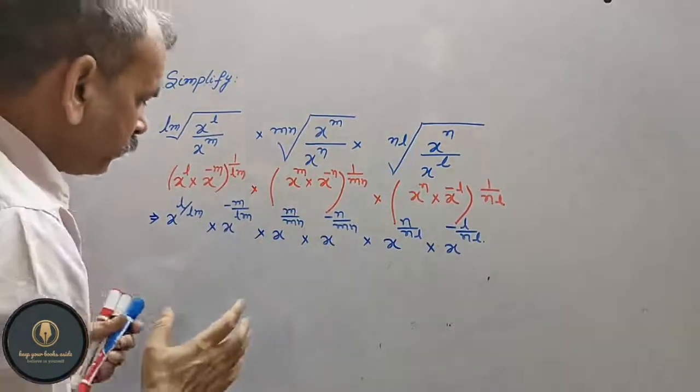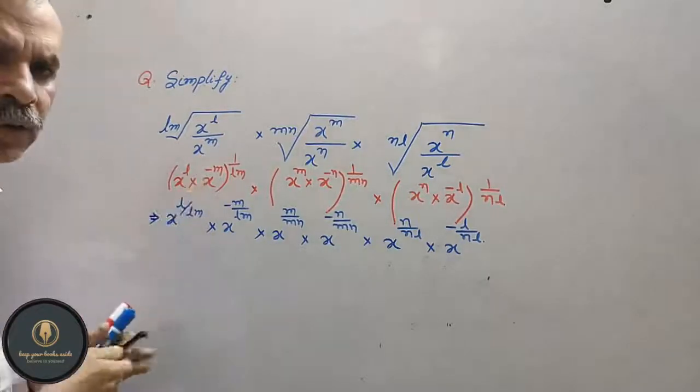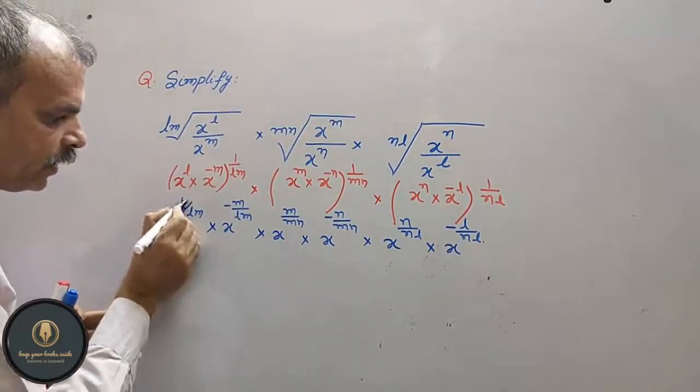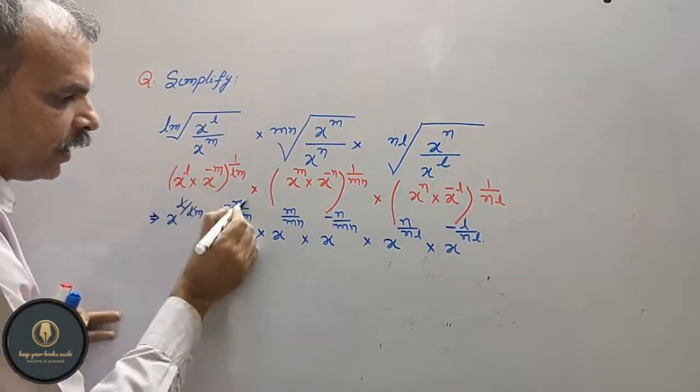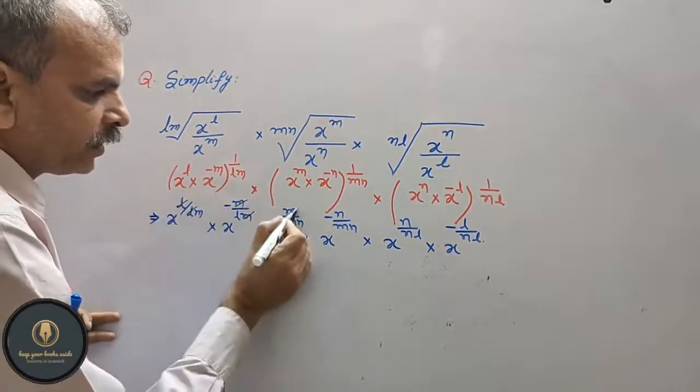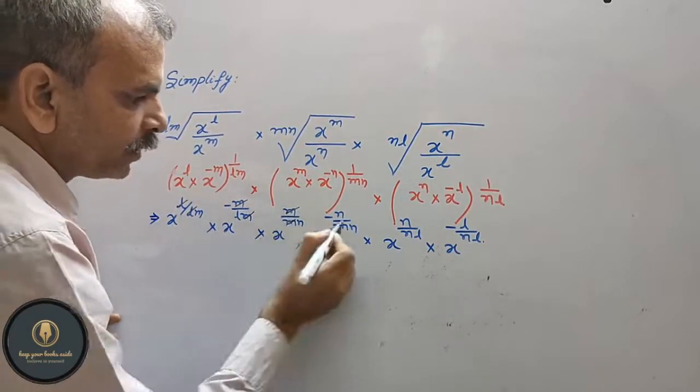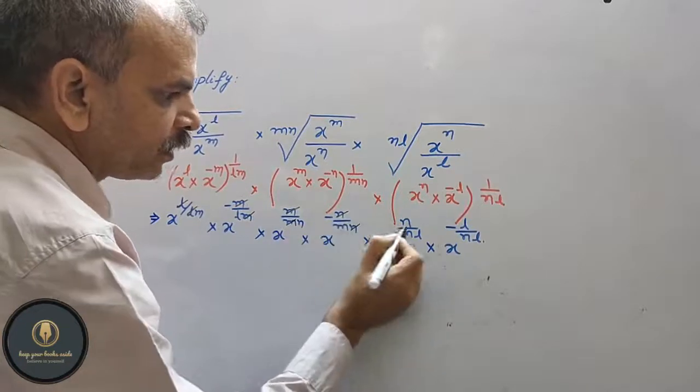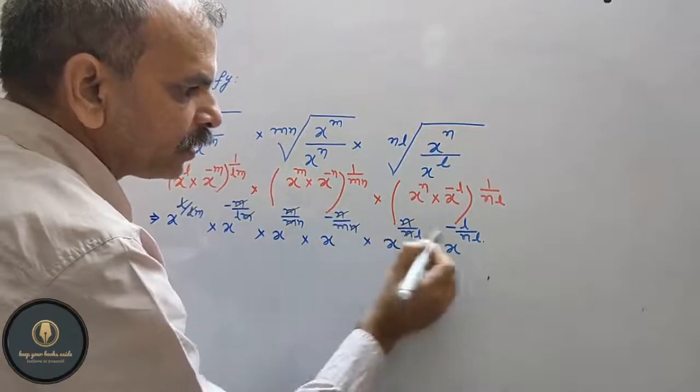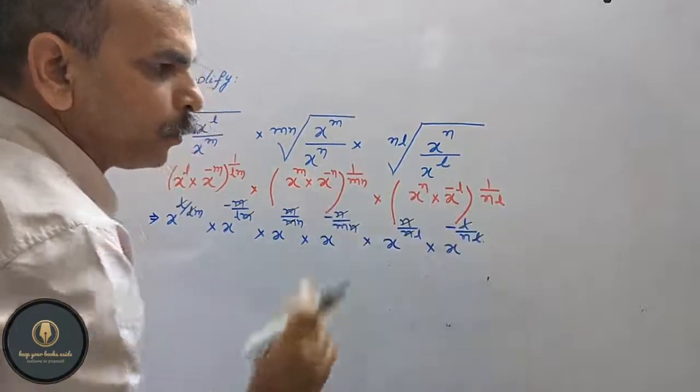Now what do we do? We cancel what cancels with what: l with l, m with m, m, n, n, n with n, l with l.